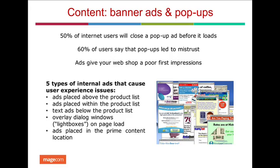There are five types of internet ads and bonus graphics that cause particular severe usability and user experience issues: ads placed above the product list, ads placed within the product list, text ads below the product list, overlay dialogue windows or lightboxes on page load, and ads placed in the prime content location. Generally, ads give your webshop a poor first impression and distract shoppers from achieving their goal — unless it's a new product, discount offer, or free shipping promotion for your customers. We do not suggest placing any advertisement that is not meaningful and user-friendly.